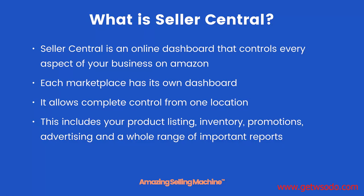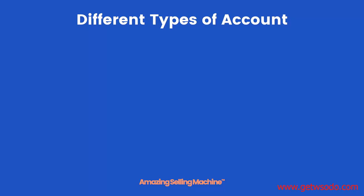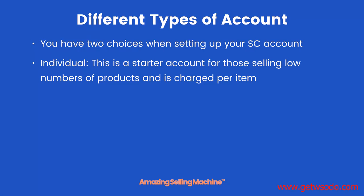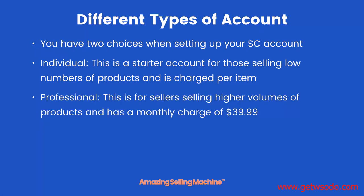There are two types of accounts. Individual: this is a starter account for those selling low numbers of products and is charged per item. Professional: this is for sellers selling higher volumes of products and has a monthly charge of $39.99. It's worth noting that 'individual' is just the name they give the account — it doesn't mean you choose that account only if you don't have a business.